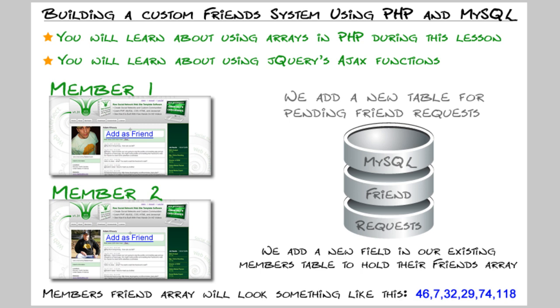You can get the source code for all of this at webintersect.com. Version 1.32 will have this friend system and tutorial with well-commented code for better understanding.